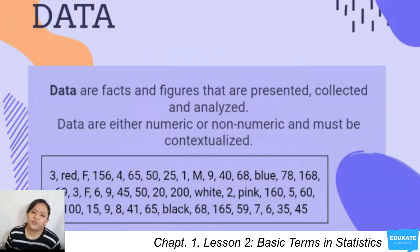Now, given the following below, can this group be considered as data? You have here the number 3, you have red, F, 156, 4, 65, 50, 25, 1, M, 9, 40, 68, blue, 78, 168. Can this be considered as data?